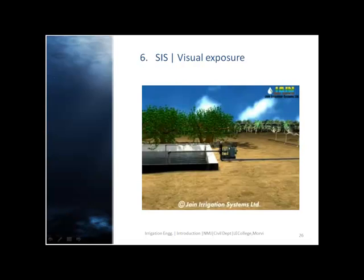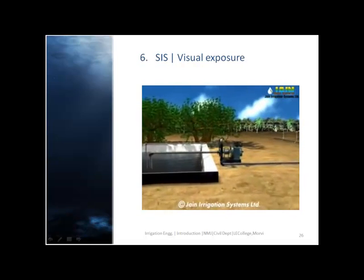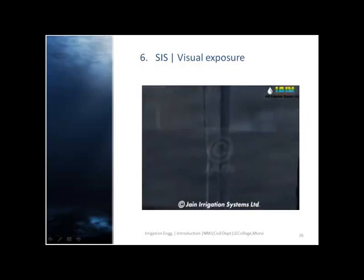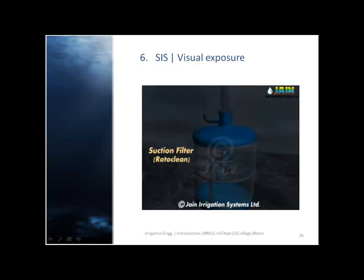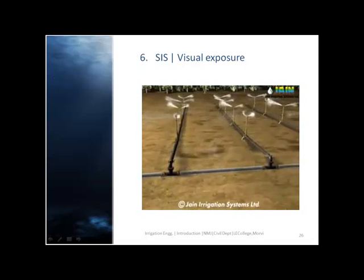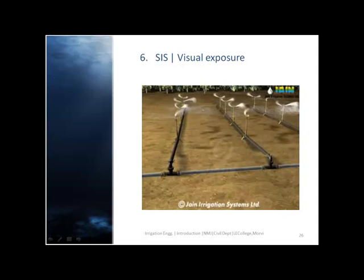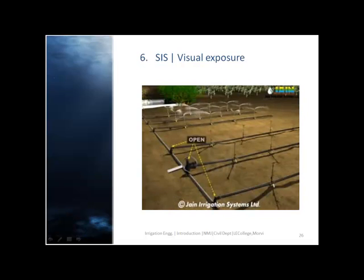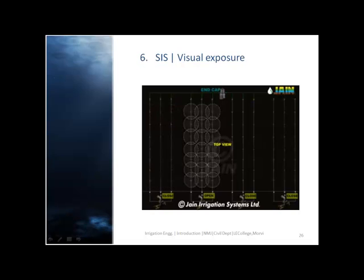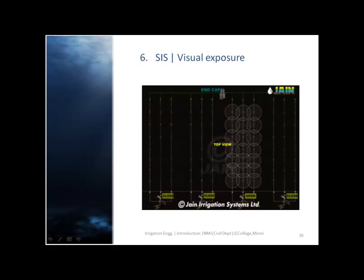This is the video demonstration of the sprinkler irrigation system. A suction filter collects water from a storage tank and passes it through pipes, which then delivers it as a spray form onto the field. The top view of the irrigation system shows the circular distribution of water.